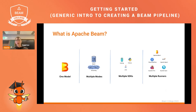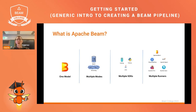Beam provides one programming model which lets you run multiple modes of data processing. On one hand we have bounded data, which is processed via batch, and on the other hand unbounded data, which is processed via streaming. Batch data sources can be a file or a database, and streaming services can be messaging services. Currently Beam offers three SDKs in Go, Python, and Java, and it runs on multiple runners such as Google Cloud Dataflow, Apache Spark, Flink, Apache Apex, and for local development it also offers the Direct Runner.